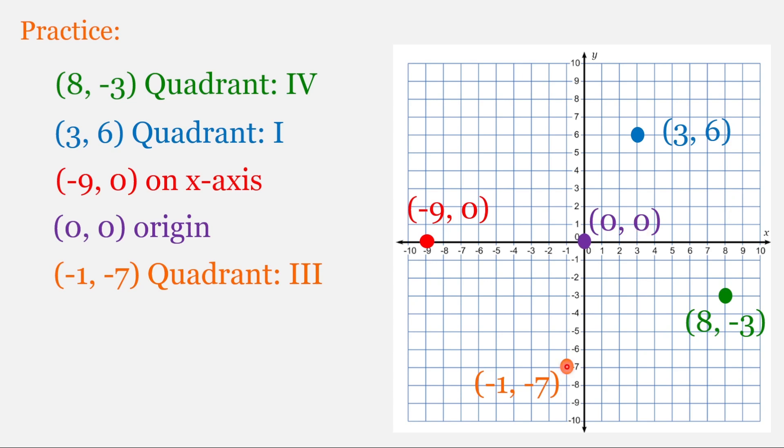Then for the orange point, if we move up to the x-axis, it's going to cross at x equal to negative 1. So our x-coordinate is negative 1. And to the y-axis, it crosses at negative 7. So we have the ordered pair negative 1, negative 7. And that's in the third quadrant.